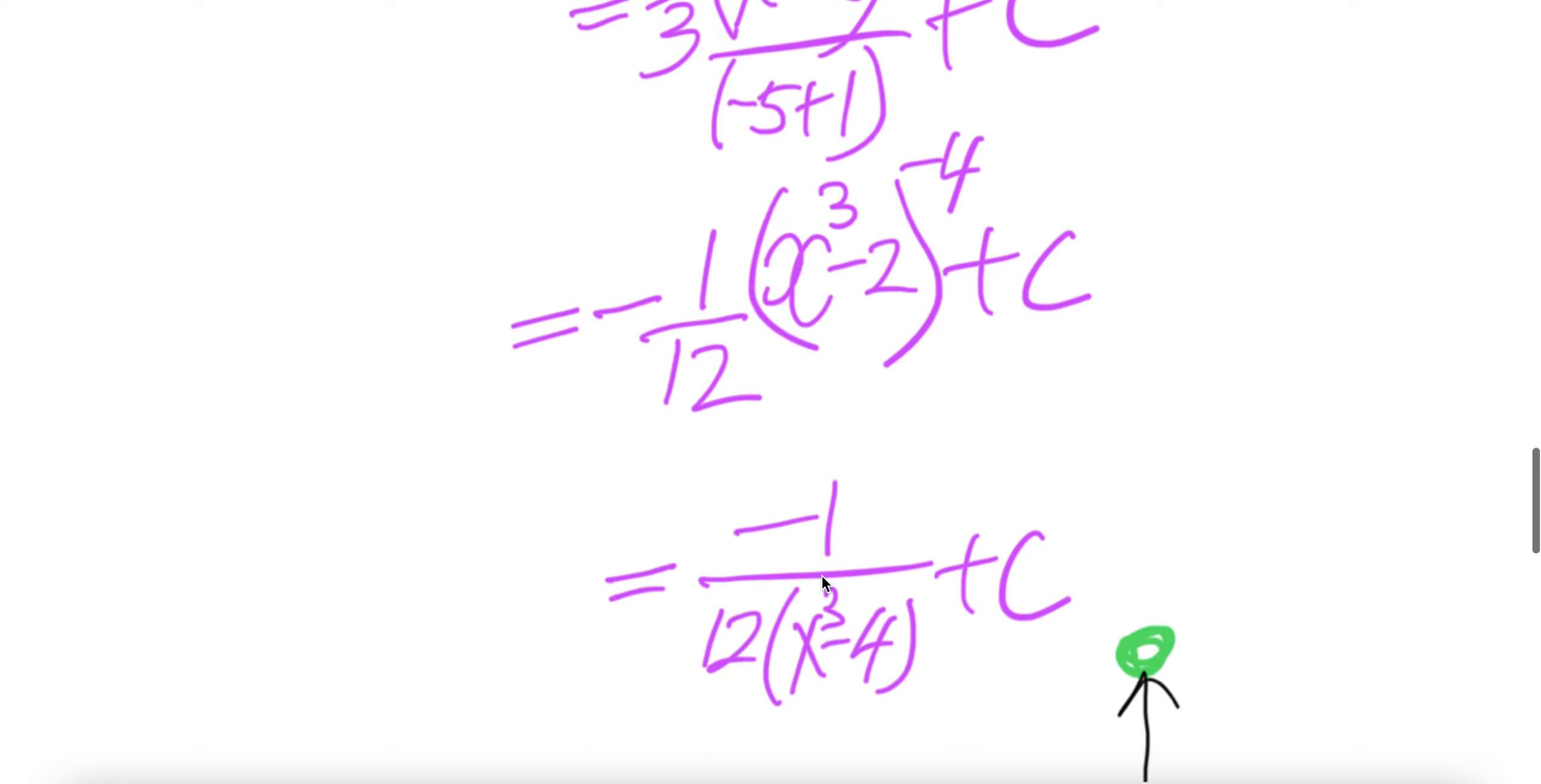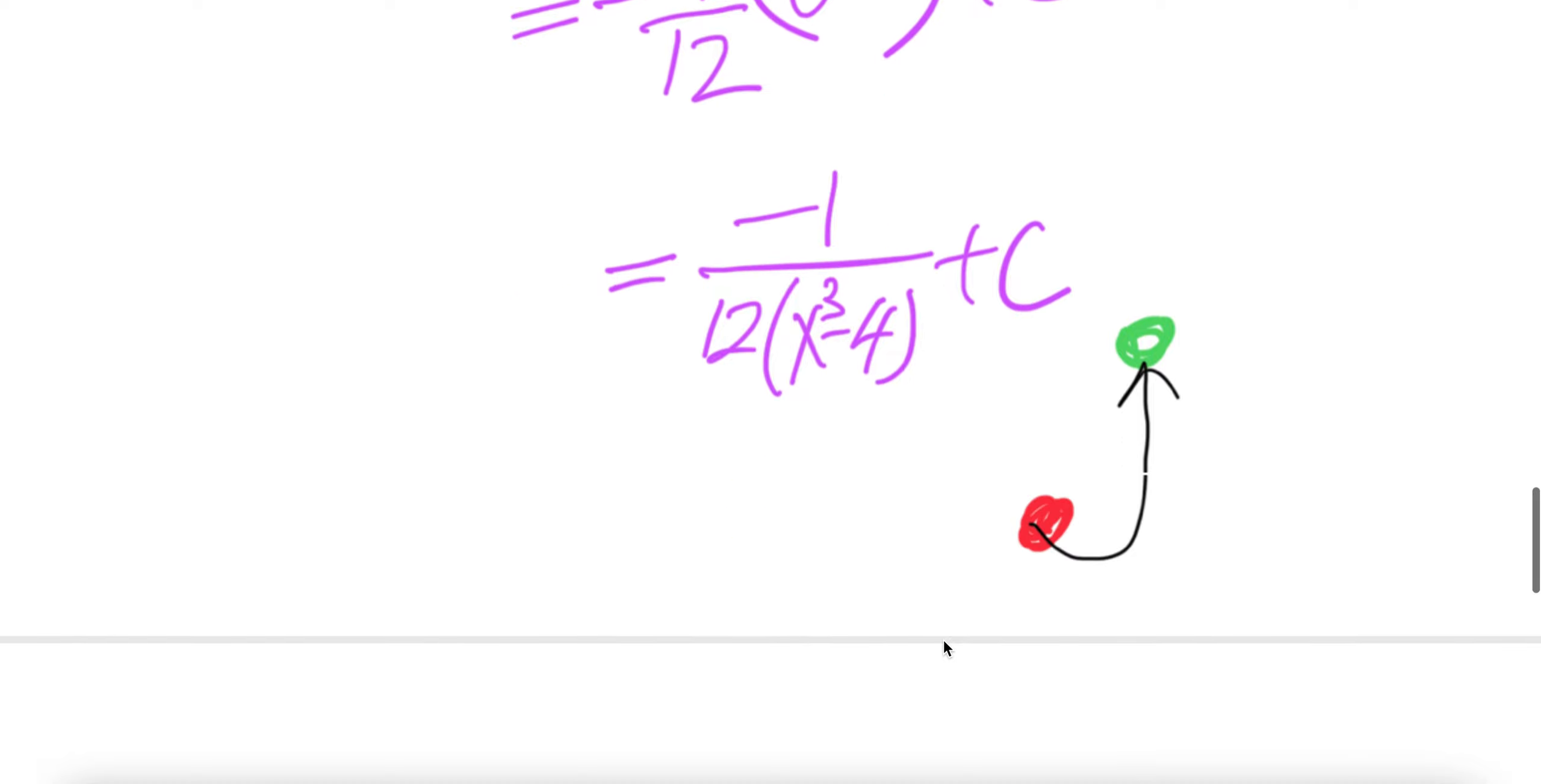You can write that as 1 over (x³-4). Oh guys, it's a typo. 2 should be here and 4 should be here, not 4 replaced by 2. It's (x³-2) here, (x³-2) to the power of 4. Done.